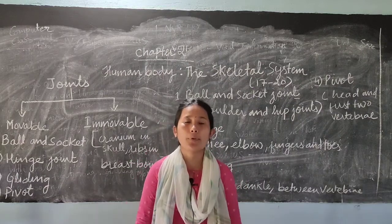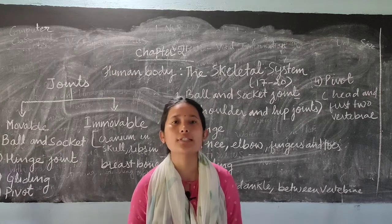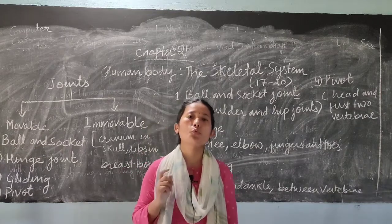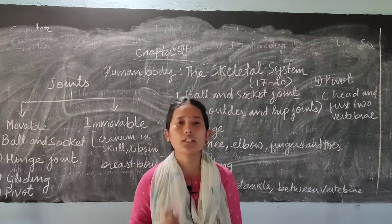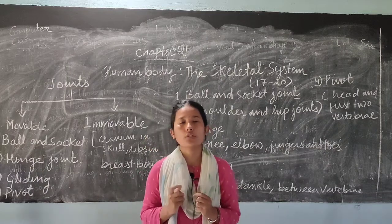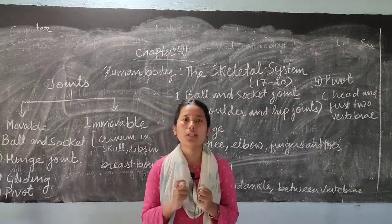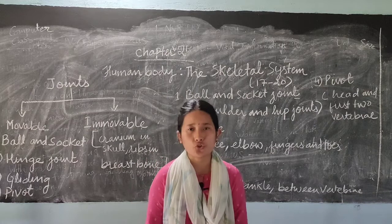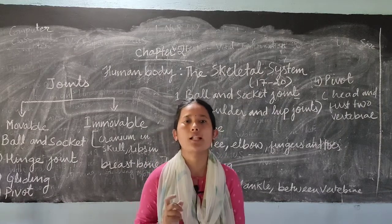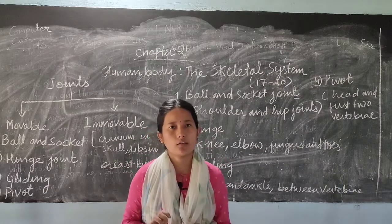A joint is a place where two bones meet. The place where two bones meet is known as a joint, and these two bones are held together with the help of a tissue known as ligaments. So ligaments help in holding two bones together.